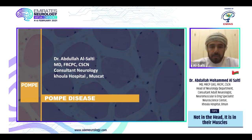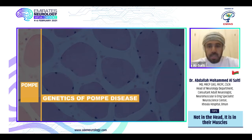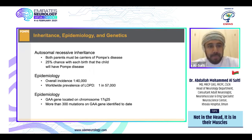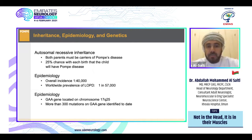We'll start about the genetic testing, about the genetics and the inheritance. Pompe disease is inherited as an autosomal recessive — both parents must be carriers of the disease, giving a 25% chance with each birth that the child will have Pompe disease. The overall incidence is around one in 40,000, and worldwide prevalence is one in 57,000.